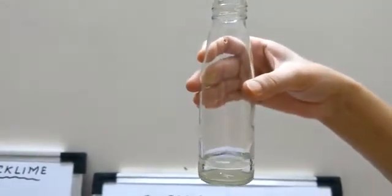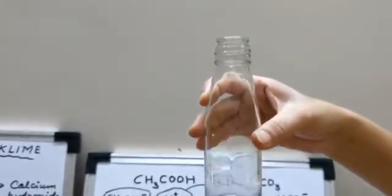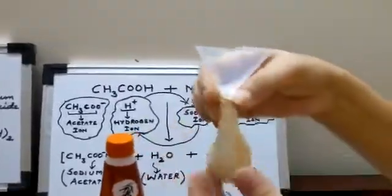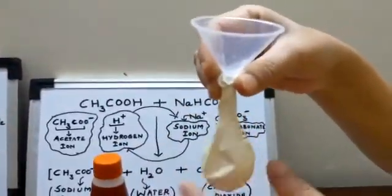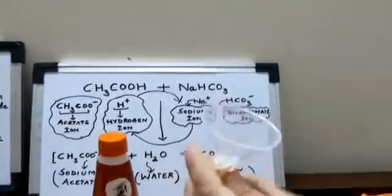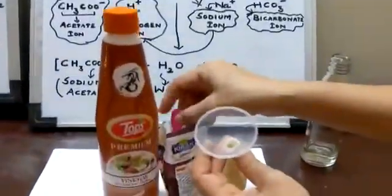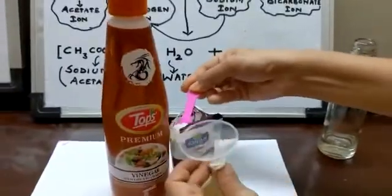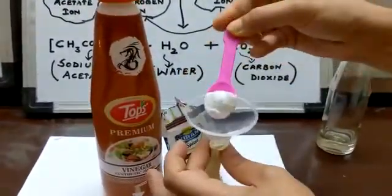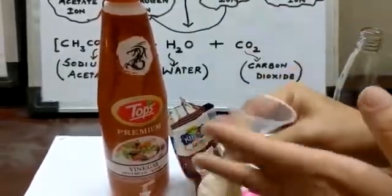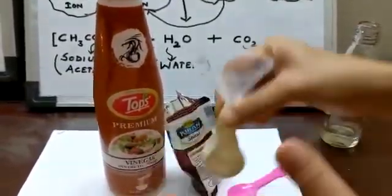Now with the help of this funnel, I will be adding baking soda into this balloon. The funnel helps you add baking soda very easily. I'm taking a spoon and adding baking soda. You can see it becomes quite easy to add baking soda in this balloon.